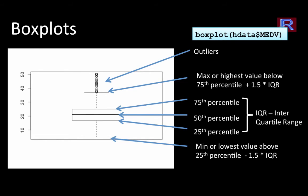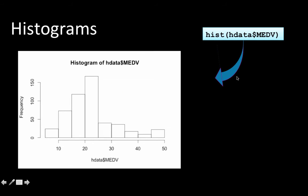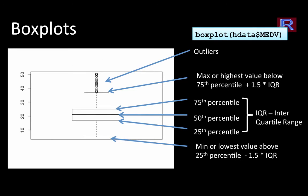Another very important or useful plot is what is called a box plot and that also gives you a good idea of how the values are distributed, how the values of an attribute are distributed. Here we see boxplot hdata dollar MEDV, which is really the same thing as this. The attribute is the same, MEDV. This is showing your histogram. This is showing your box plot of the same thing. The box plot is also called a box and whisker plot.